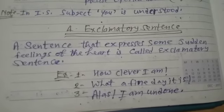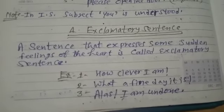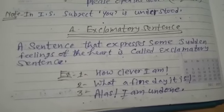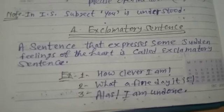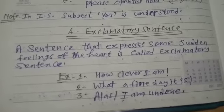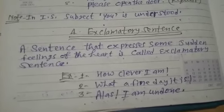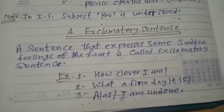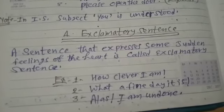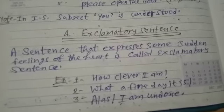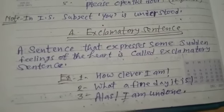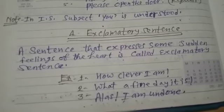Definition of exclamatory sentence: A sentence that expresses some sudden feelings of the heart is called an exclamatory sentence. 'Expresses' means 'beakht karata hai'. 'Some sudden feelings' means 'kuch achanak feelings', 'bahawnao ko prakata hai'. 'Of the heart' means 'kheday ki'. Is called exclamatory sentence — vismiyadhi suchak waakhi.